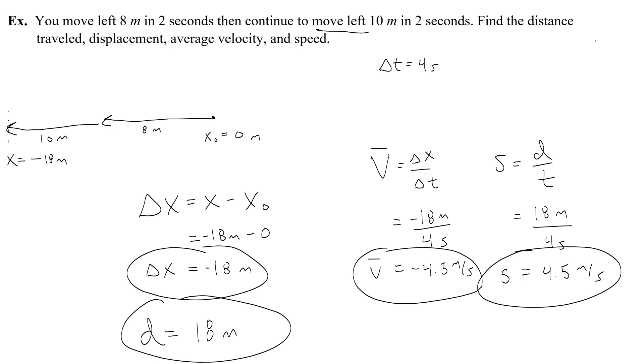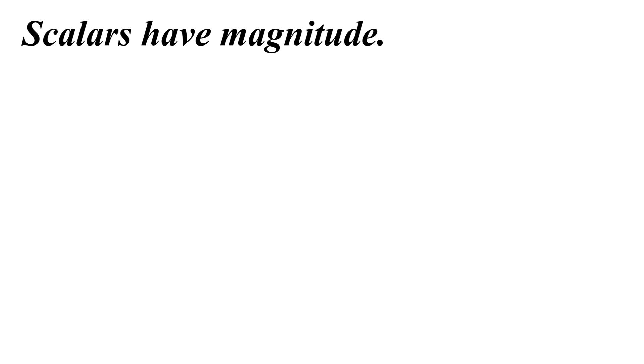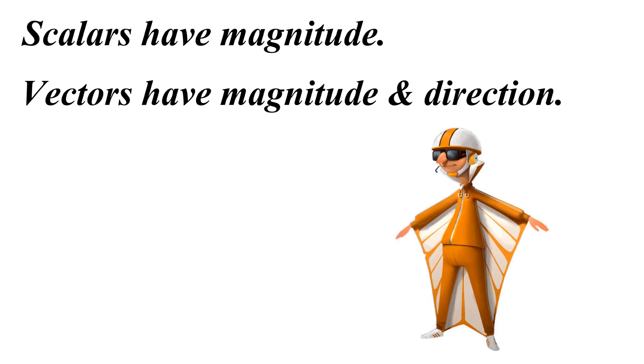In physics, we actually have a way of categorizing these things. We say that scalars are things that have magnitude. So that would be distance and speed. And vectors are things that have magnitude and direction. So velocity and displacement.